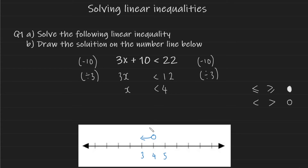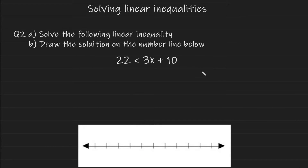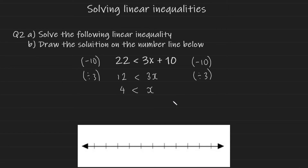Now let's look at some unique cases. In this example we have the same values as before, however the variable x is on the right-hand side and the value is on the left-hand side. We begin solving it the same way — isolating x — and if you do that successfully, you end up with a very similar result, except the variable is on the right-hand side.